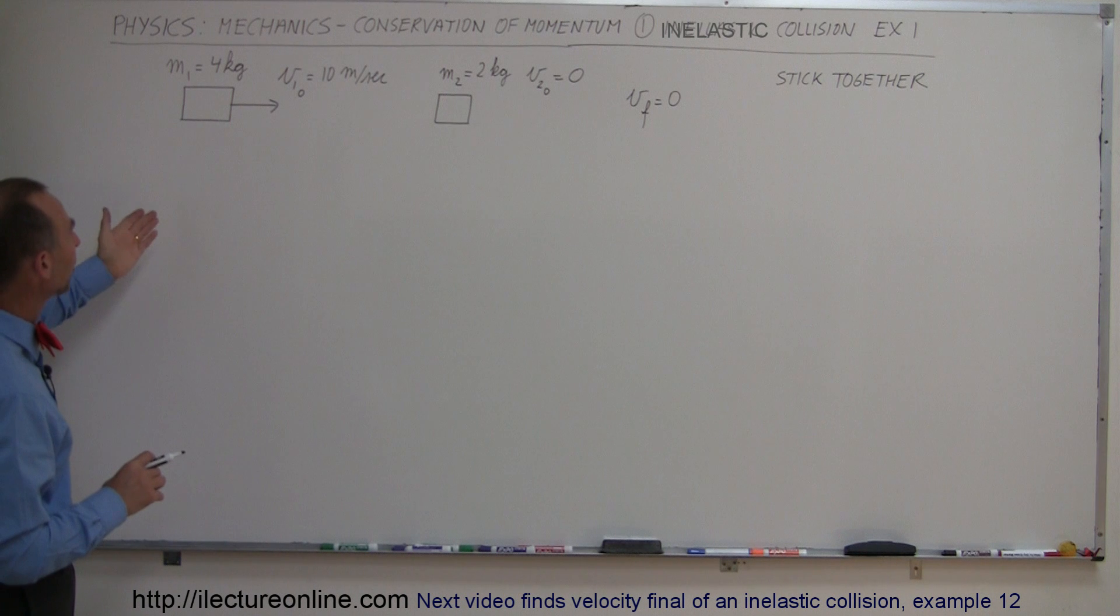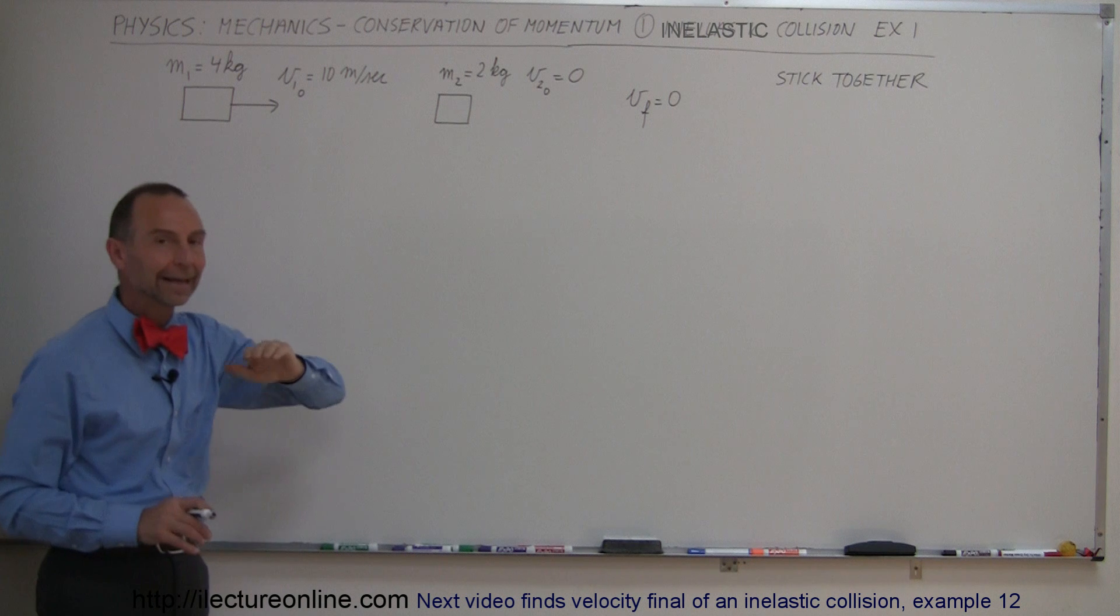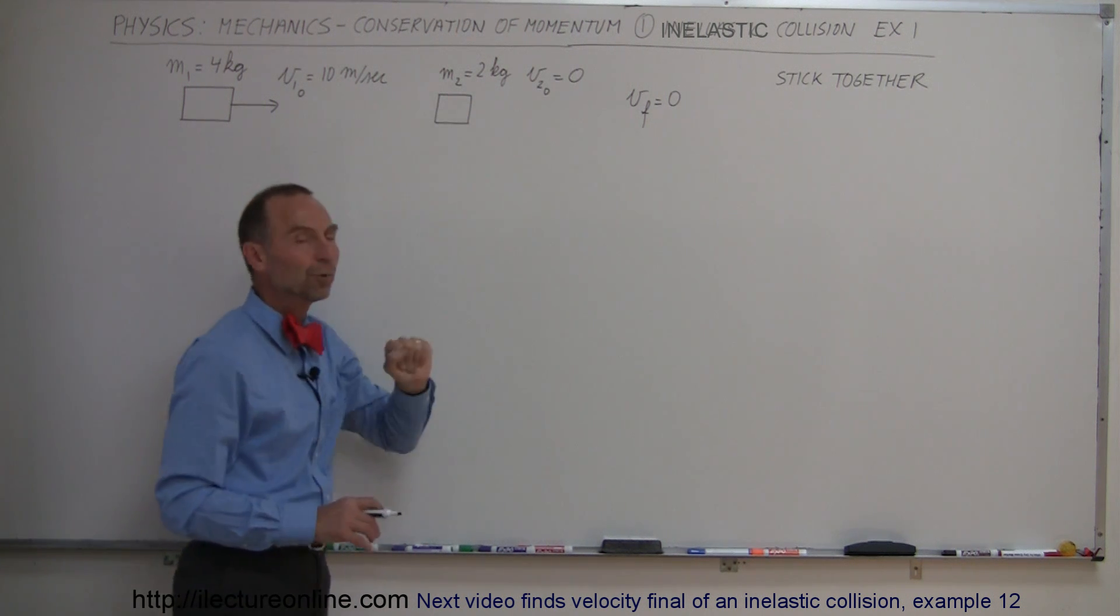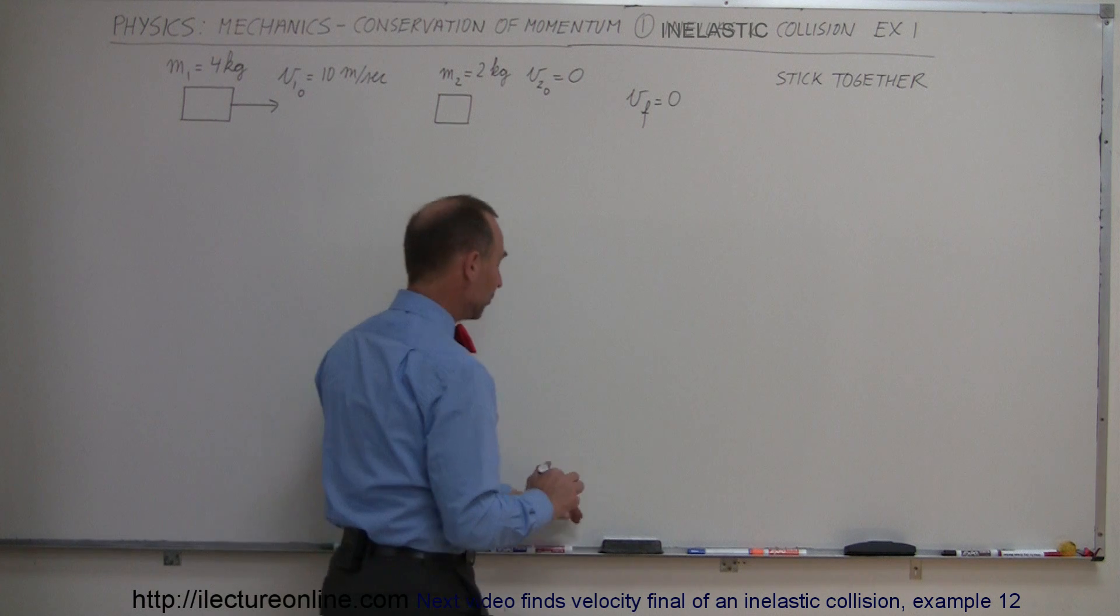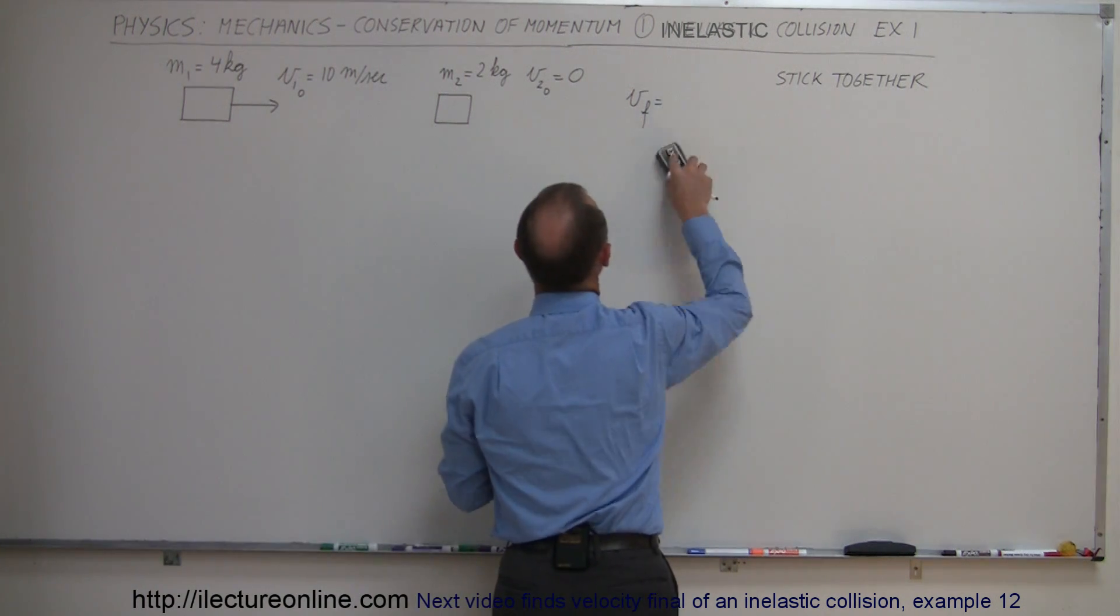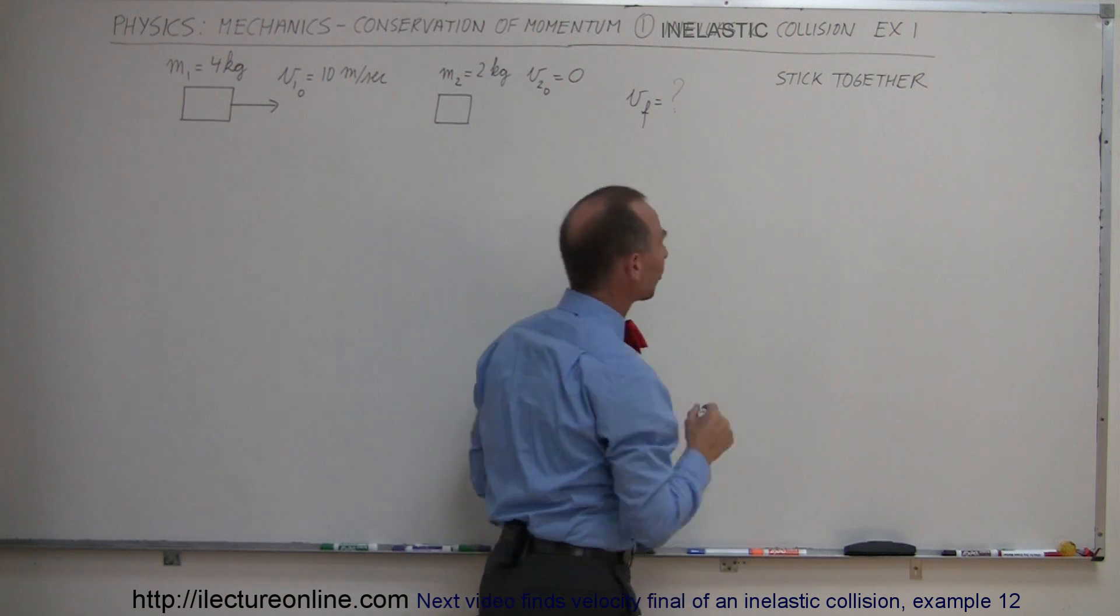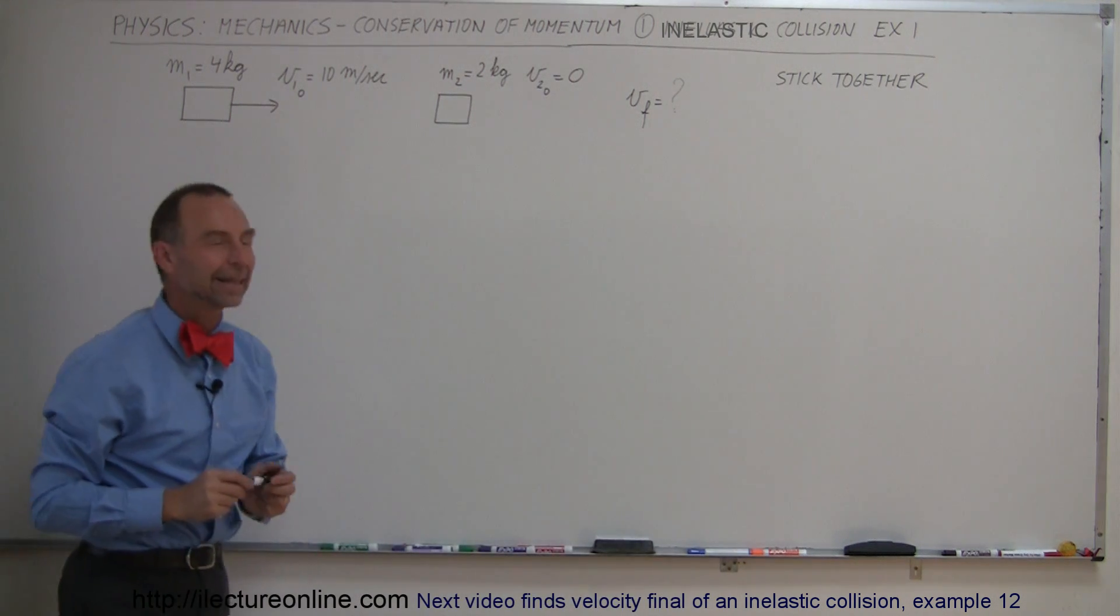Here we have a simple example where we have one mass, four kilograms, moving to the right with initial velocity of 10 meters per second, colliding with a second object, mass two, two kilograms, and not moving at all. So v final is, that's the question mark, what is the final velocity? And of course the condition here is that the two will stick together.